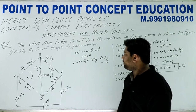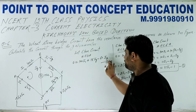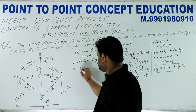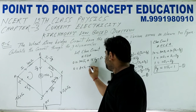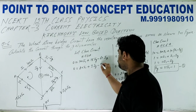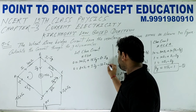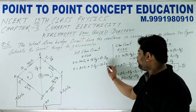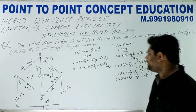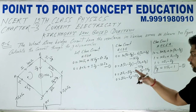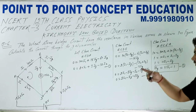Equation number 1 को modify करते हैं — 5 से divide कर देते हैं: 20·I1 + 3·IG - 12·I2 = 0। यह हो गया Equation number 1 (modified)। अब हमें तीनों variable की value निकालनी पड़ेगी, तो IG की value replace कर दो — इन दो equations में IG की value put कर दो और solve करो।